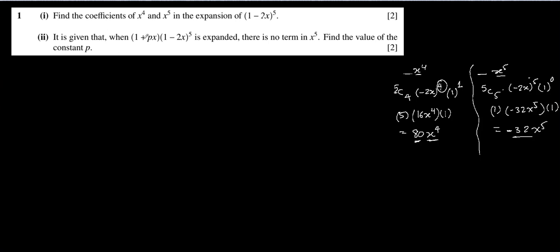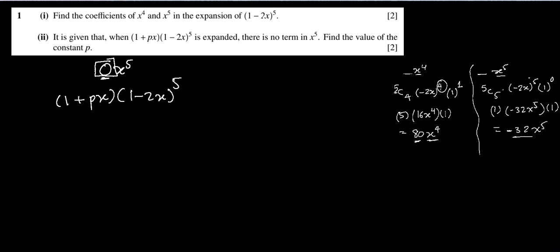In the second part we have to find p so that there is no term in x⁵. What they mean is that the x⁵ coefficient equals 0. No x⁵ means 0x⁵. So we have to find the coefficient of x⁵ and set it equal to 0. If we write 1 plus px times 1 minus 2x to the power 5, which we have already expanded as having 80x⁴ and minus 32x⁵ terms.